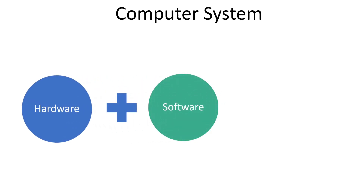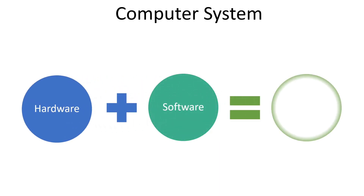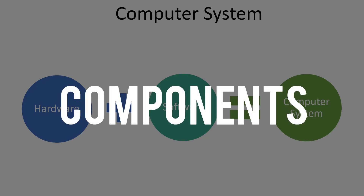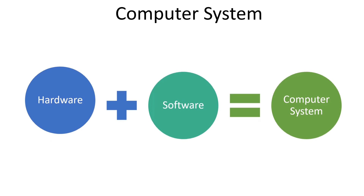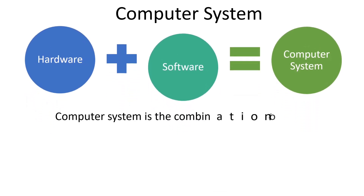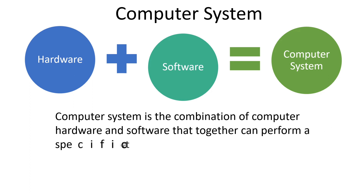Computer hardware and software combine together to form a complete computer system. Hardware and software are the two major components of our computer system that integrate together. We can say that a computer system is the combination of computer hardware and software that together can perform a specific task.